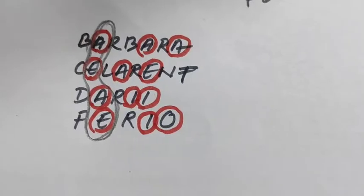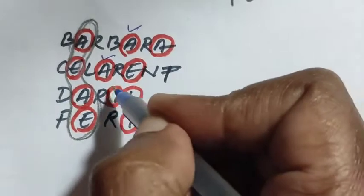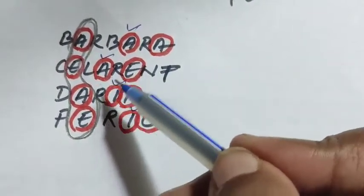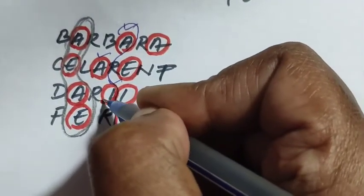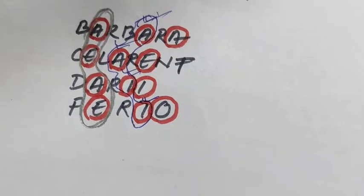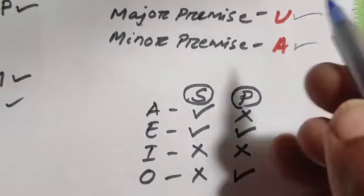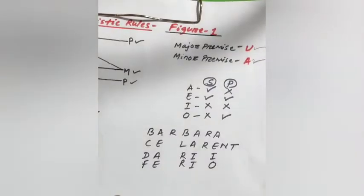Now I will examine the minor premise. The minor premise propositions in the four valid modes are: A in Barbara, A in Celarent, I in Darii, and I in Ferio. A proposition is a universal affirmative and I proposition is a particular affirmative. All of these — A, A, I, I — are affirmative propositions. Therefore, the minor premise must be affirmative. This is Rule 2 of Figure 1.